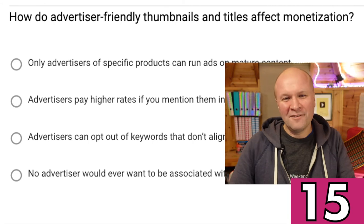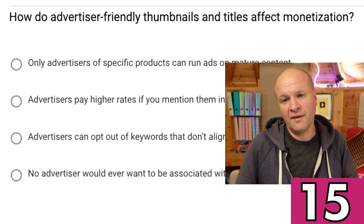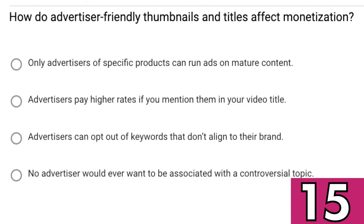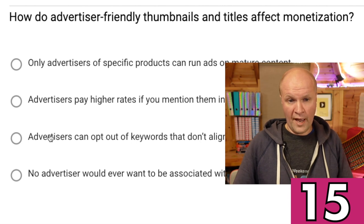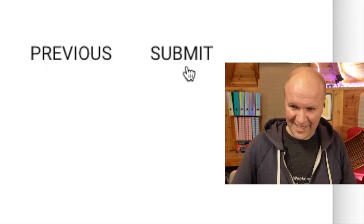Finally, last question. How do advertiser-friendly thumbnails and titles affect monetization? Only advertisers of specific products can run ads on mature content. Advertisers pay higher rates if you mention them in your video title. Advertisers can opt out of keywords that don't align to their brand. Or no advertiser would ever want to be associated with a controversial topic. I'm going to go for: advertisers can opt out of keywords that don't align to their brand. Let's click submit.